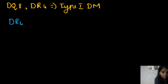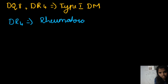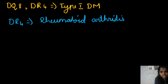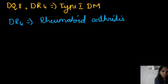HLA-DQ8 and DR4 together are seen in type 1 diabetes mellitus. DR4 alone is seen in rheumatoid arthritis — do not get confused between the two. In rheumatoid arthritis, the rheumatoid factor will be positive, and for specific confirmation of the diagnosis, we go for anti-CCP, which is a more specific marker.